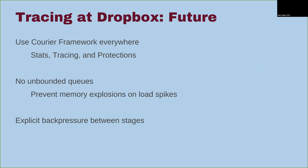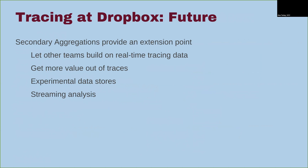The reason we're doing this is we use the Courier framework, which provides stats, tracing, and protections — all the things we want out of a service framework — and we get that for free by using it. Another problem with the current system is queues in front of queues in front of queues: Kafka feeding into a queue in the ingester, feeding into a queue within Jaeger — and when things back up, it doesn't go well. So rather than rely on queues, we use explicit RPCs and propagate back pressure explicitly between stages. Secondary aggregations are an extension point that let people build new interesting things on top of tracing, rather than assuming what the tracing team provides is all there is.